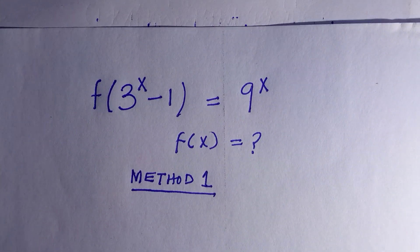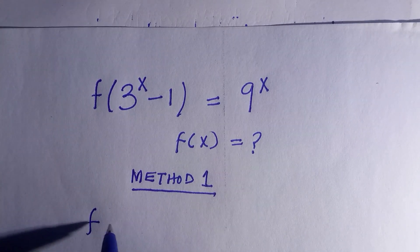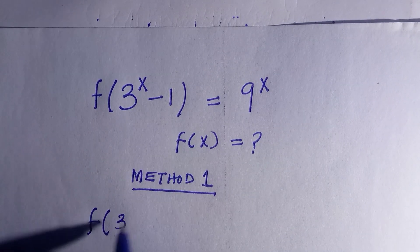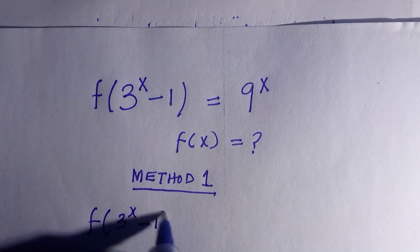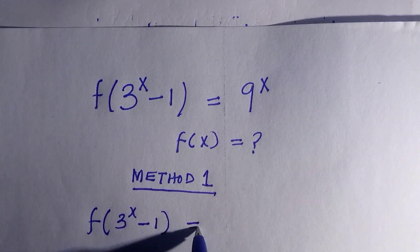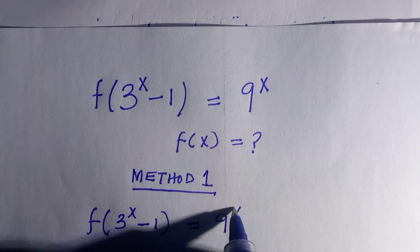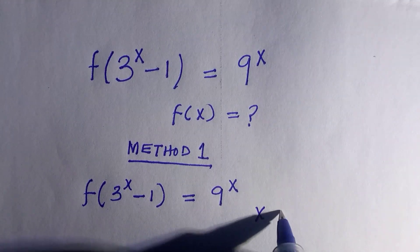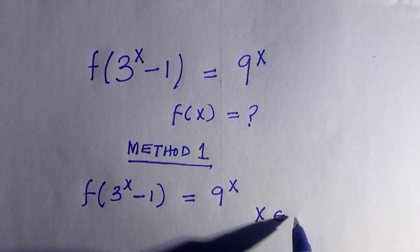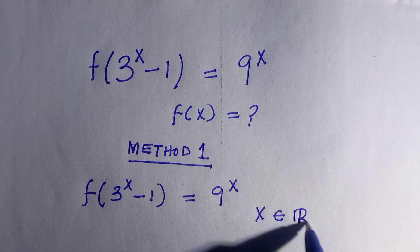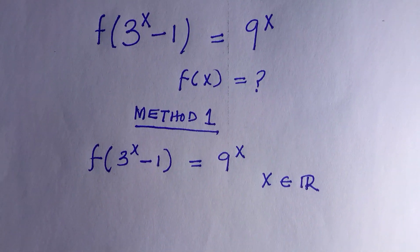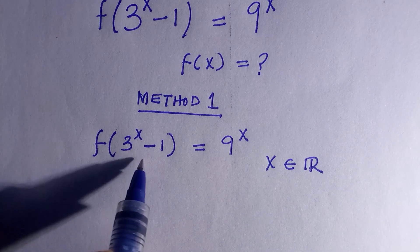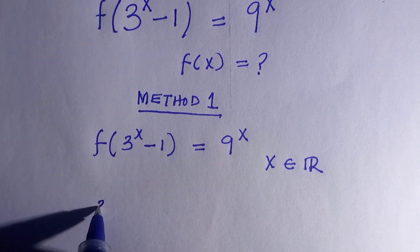This equation is going to make your day. Let's see how to solve this. We have f of 3 to the power of x minus 1, equals 9 raised to the power of x, where x is a member of the real numbers — so x can take any value from the real numbers.